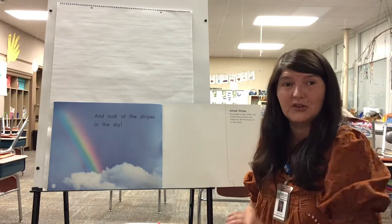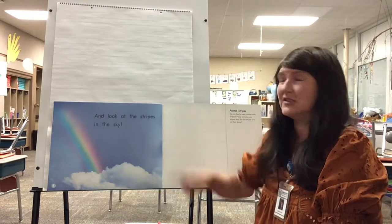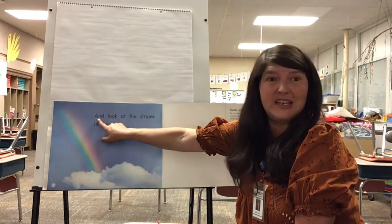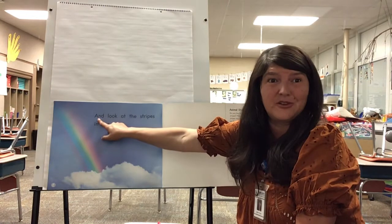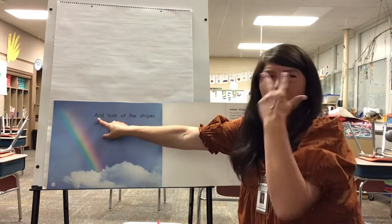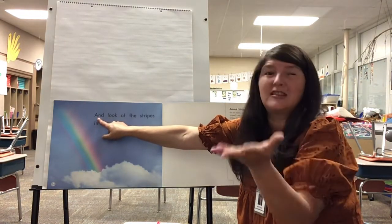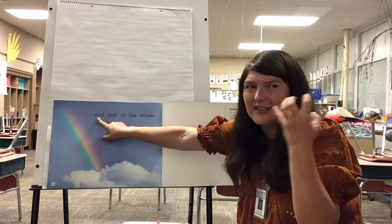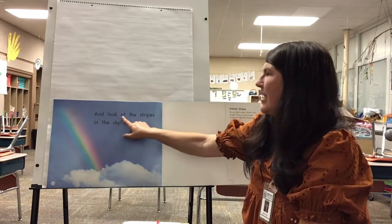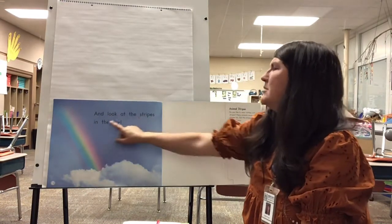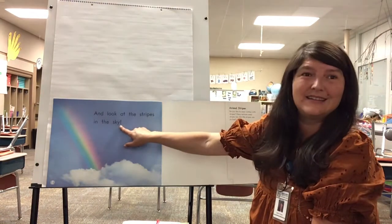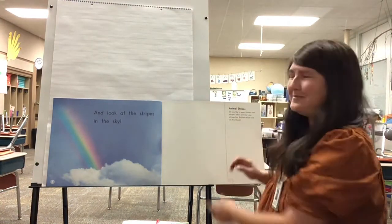Be sure you're looking at the words. I always recommend that when you're at the beginning of reading — when you're little and you're just learning — that you point at those words so that your eyes are looking at them and your brain is thinking about them. And look at the stripes in the sky. Make sure you're doing that.